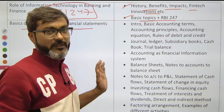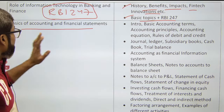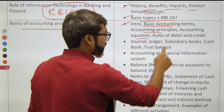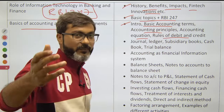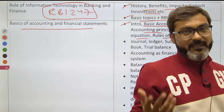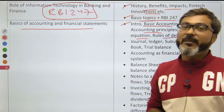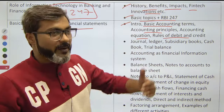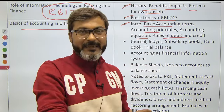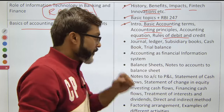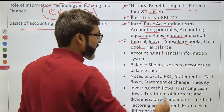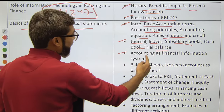Now for the Accounting section — this was recently added to the syllabus. You need to cover: introduction, basic accounting terms, accounting principles, accounting equations, and rules of debit and credit. Some of you may be from a science background and may not know what goes on the credit side versus the debit side in accounting. Also cover journal, ledger, subsidiary books, cash book, and trial balance.